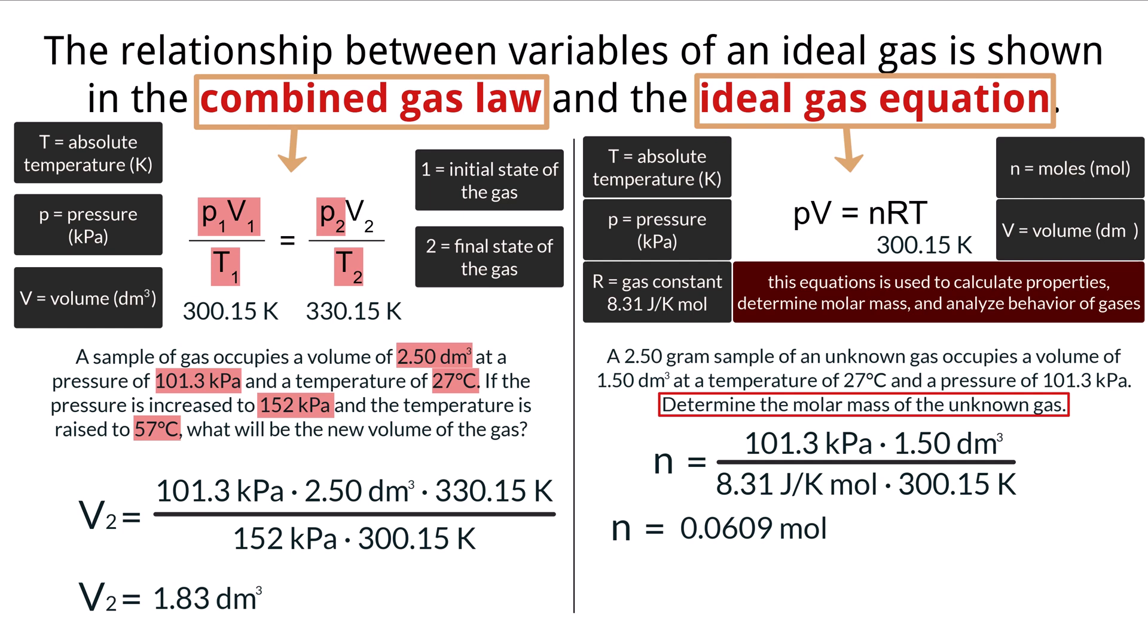So in this sample we have 0.0609 moles of the unknown gas. To calculate the molar mass, we simply divide grams of the gas by the moles. We can do that by taking the grams of the sample that we started with, 2.50 grams, and dividing by the moles of the sample that we calculated, 0.0609 moles. We get an answer of 41.05 grams per mole.